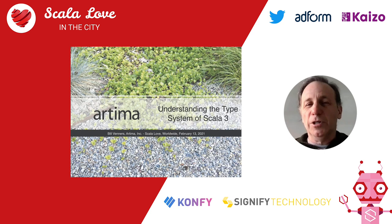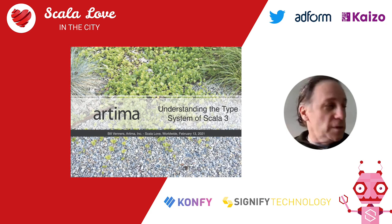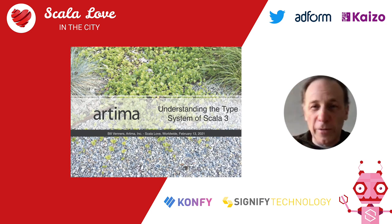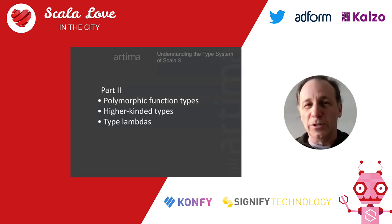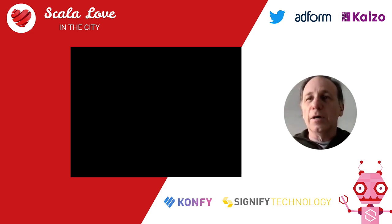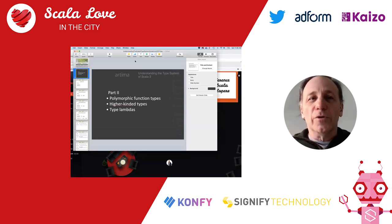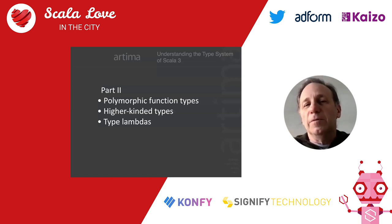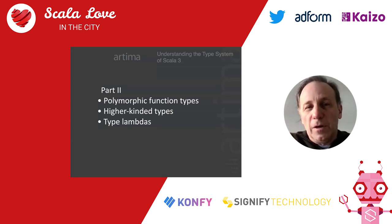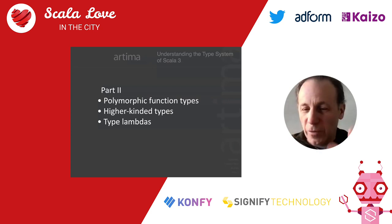This talk is a continuation of a talk I gave at the last Scala Love. Last time I tried to cover most of the type system but it was too big, so I did part one. I fleshed out part two — again too big — so there'll be a part three. Today I'm going to cover just three things: two are new in Scala 3 — polymorphic function types and type lambdas — and higher-kinded types, which was in Scala 2 for a long time and something I've long struggled to understand deeply.